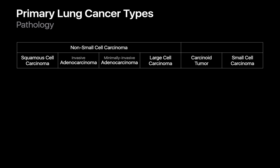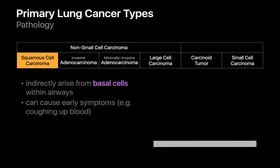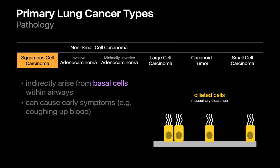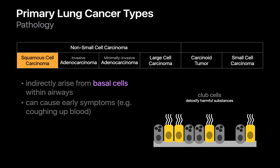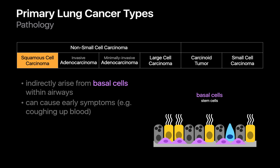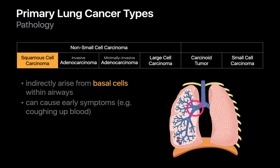Let's do a brief dive into the histopathology of the different types of lung cancer, starting with squamous cell carcinomas. If you look at the lining of the central airways, you'll find ciliated cells responsible for the mucociliary escalator, club cells responsible for detoxifying harmful substances, neuroendocrine cells that serve as sensors for conditions like hypoxia, and basal cells, which are progenitor cells for different epithelial cell types. In some individuals, these basal cells may undergo squamous cell metaplasia, which in some cases can evolve eventually into squamous cell carcinoma. Since basal cells are predominantly in the central airways, squamous cell carcinomas tend to be relatively central in their distribution.